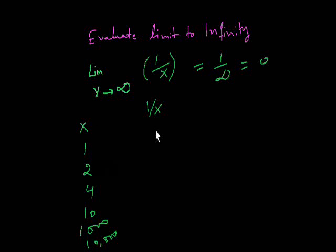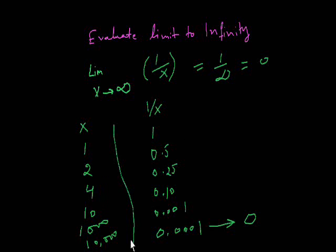One divided by one equals one, one divided by two equals 0.5, one divided by four equals 0.25, one divided by ten equals 0.10, one divided by one thousand equals 0.001, one divided by ten thousand equals 0.0001. So in the end it will go to zero, but I have to use all these approaches, not just writing zero. Okay, now I am taking another example.